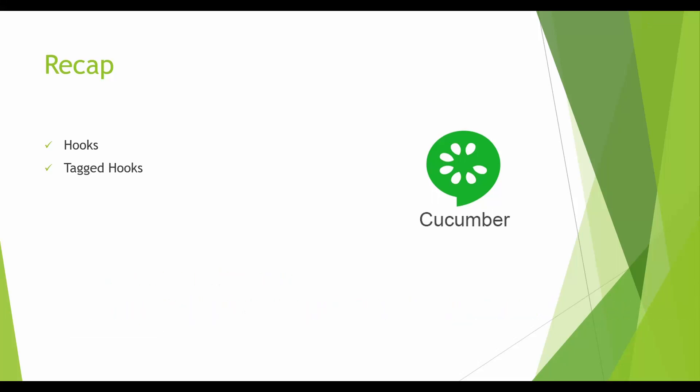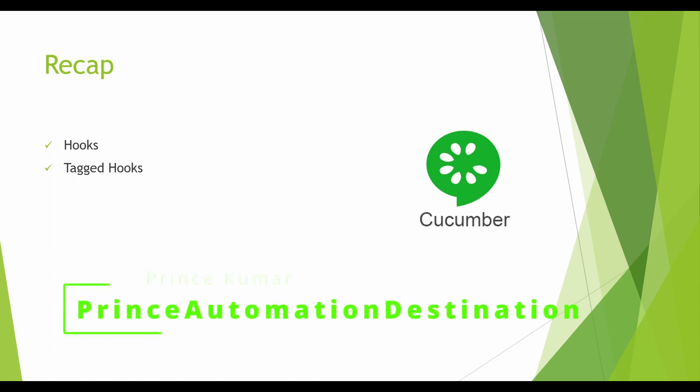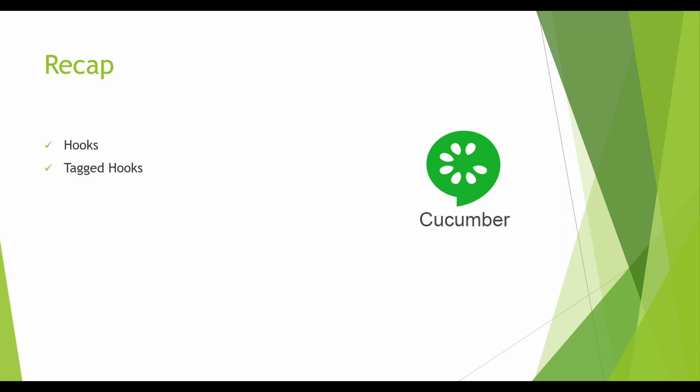Hello everyone, welcome back to my channel Prince Automation Destination. In our previous lectures of PDD Cucumber series, we discussed about hooks and tagged hooks — their uses, how we can move common lines of code to before hook and after hook, and the tagged hooks concept where we discussed how to execute some common step for a particular type of test case. For example, smoke can have a different URL and sanity can have a different URL, so using tagged hooks we can achieve it.